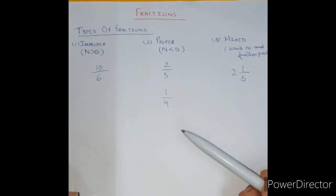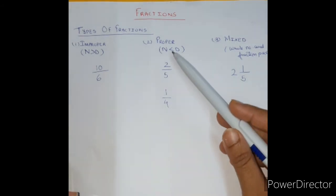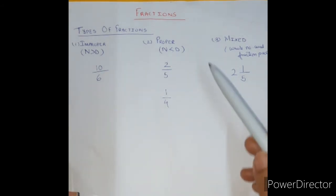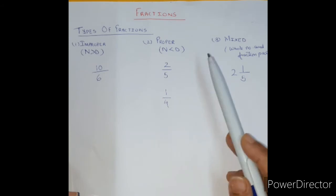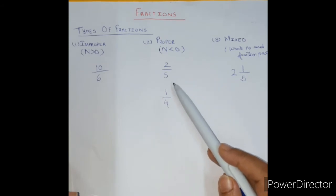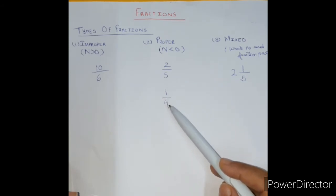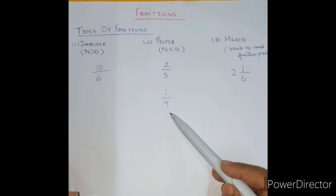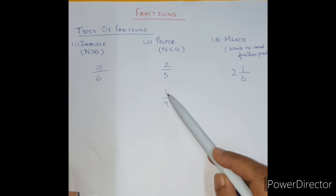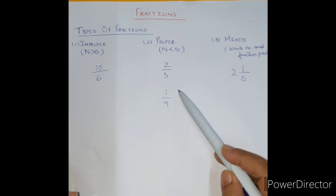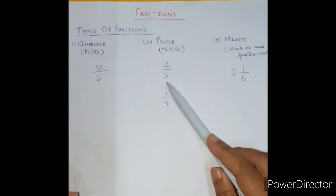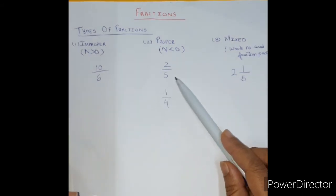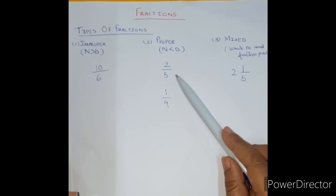So 2 upon 5 and 1 fourth are examples of proper fractions. Proper fractions occur in real-life situations — for example, out of 4 chocolates I have, I can give 1 to someone, or out of 5 biscuits I have, I can give 2 to someone.